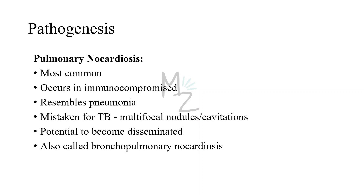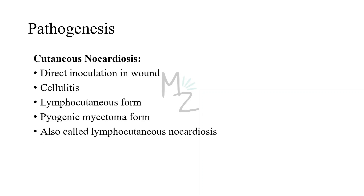Pulmonary nocardiosis has the potential to become disseminated and is also called bronchopulmonary nocardiosis. Cutaneous nocardiosis occurs when Nocardia asteroides enters the body via direct inoculation into an open wound or pre-existing injury. It causes cellulitis with local swelling and signs of inflammation, enlarged or painful lymph nodes typically in the lower extremities, and can form a lymphocutaneous or pyogenic mycetoma form.